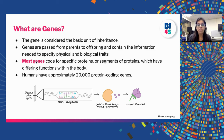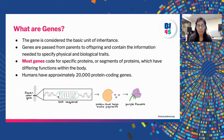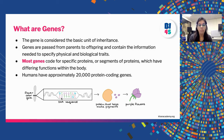Genes contain the information needed to specify physical and biological traits. Note that most genes — because not all genes — code for specific proteins or segments of proteins which provide differing functions within the body. After the Human Genome Project was completed, we have been able to tell that humans have approximately 20,000 to 30,000 protein-coding genes. For example, a flower color gene located on a particular chromosome has a particular DNA sequence which gives rise to a protein via transcription and translation, and that protein helps make pigments, eventually giving rise to the color purple in the flower.